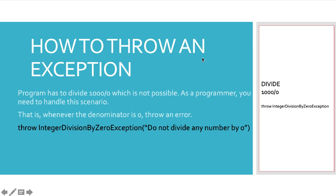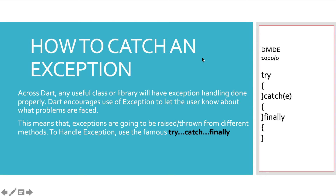How do you throw an exception? It's very simple — just use the keyword `throw`. For example, if you want to divide 1000 by zero, you can do: `throw IntegerDivisionByZeroException`. These are predetermined exceptions in Dart. When you throw it, it goes back to the user with the exception name and a message like 'Do not divide any number by zero', making it easier for the user to understand that the denominator is zero.